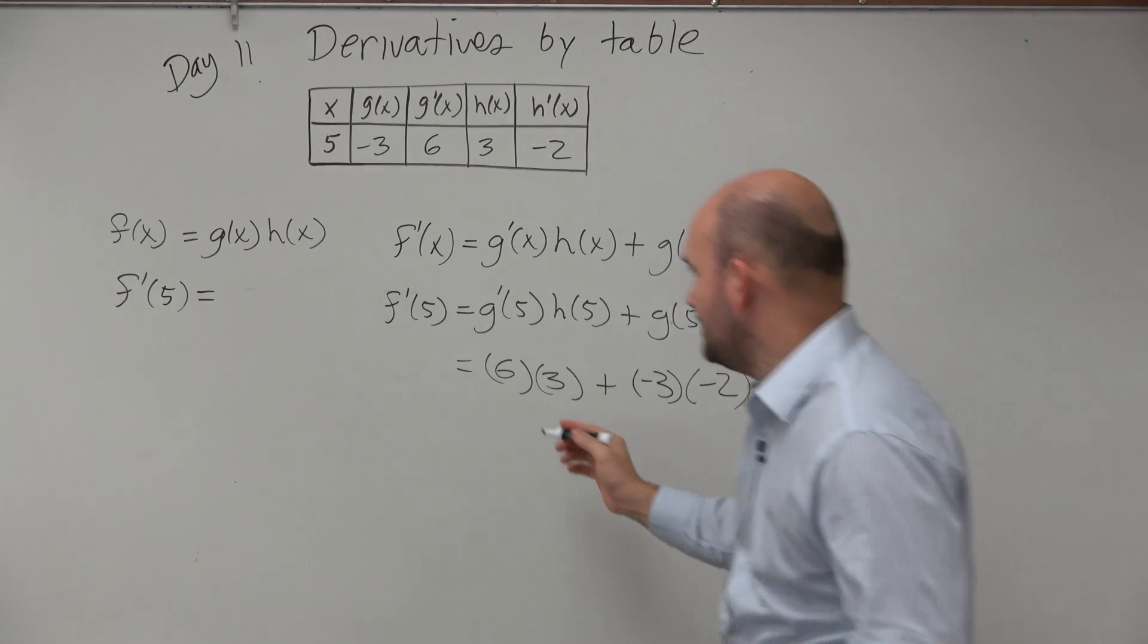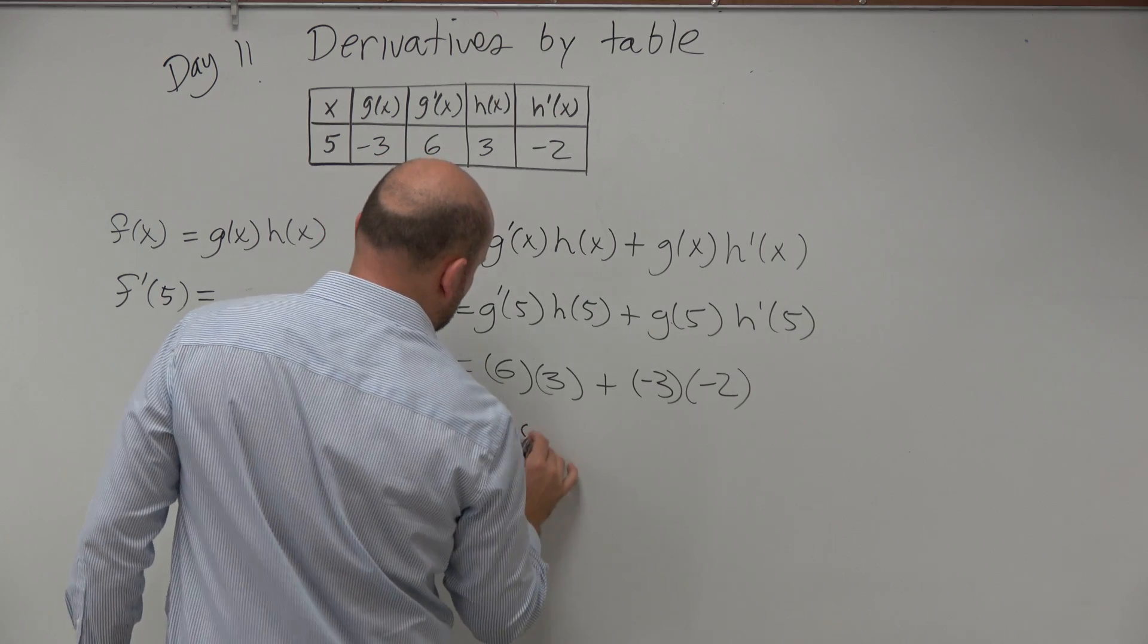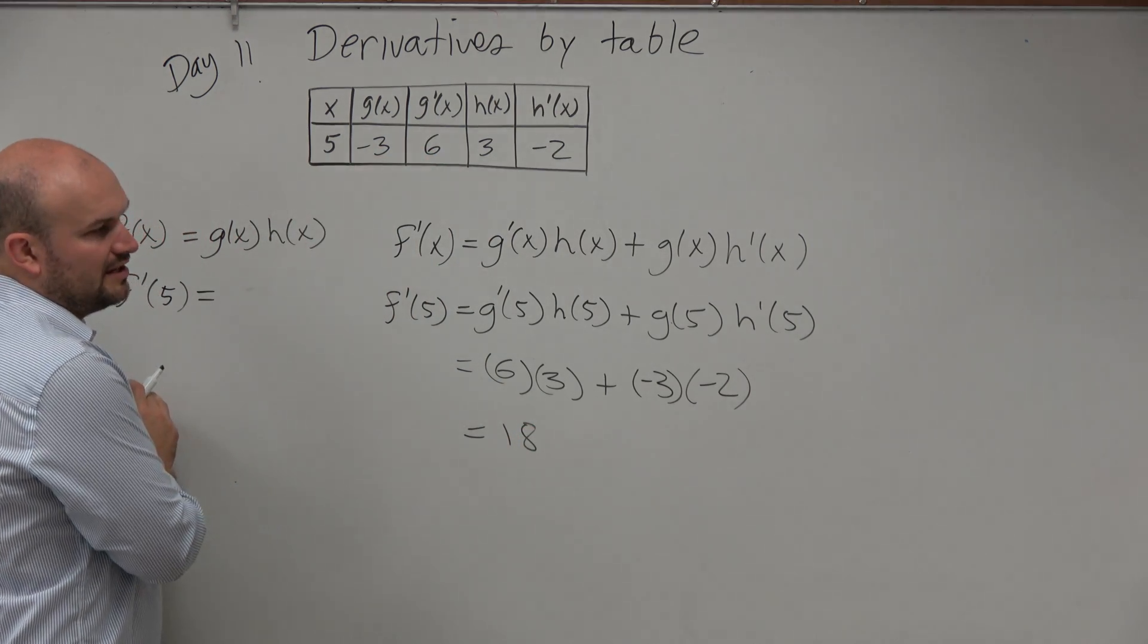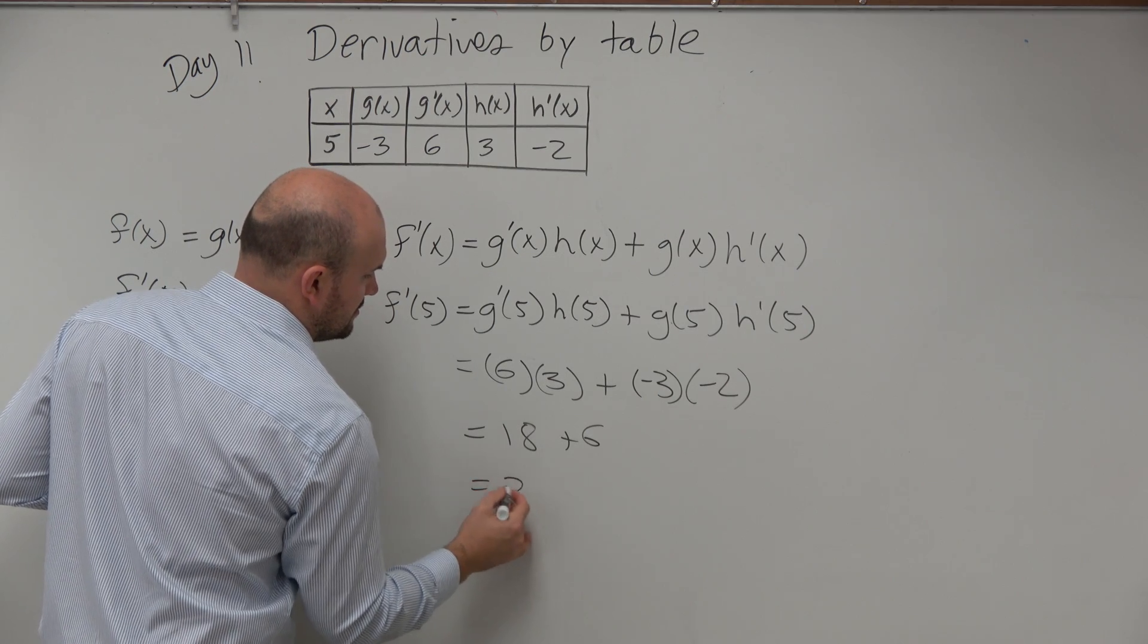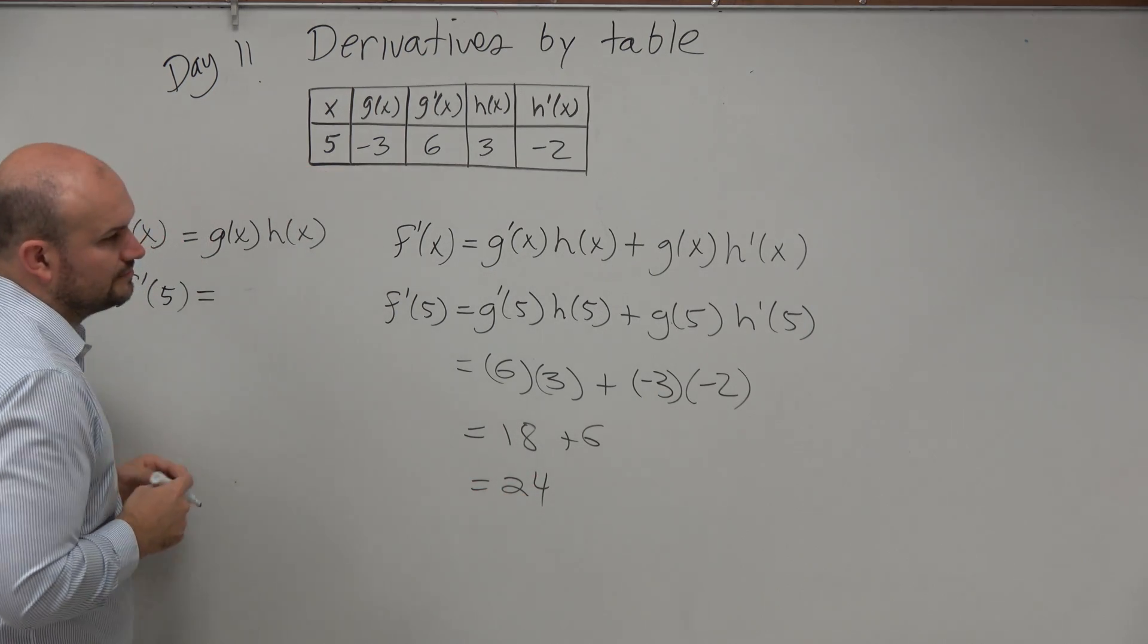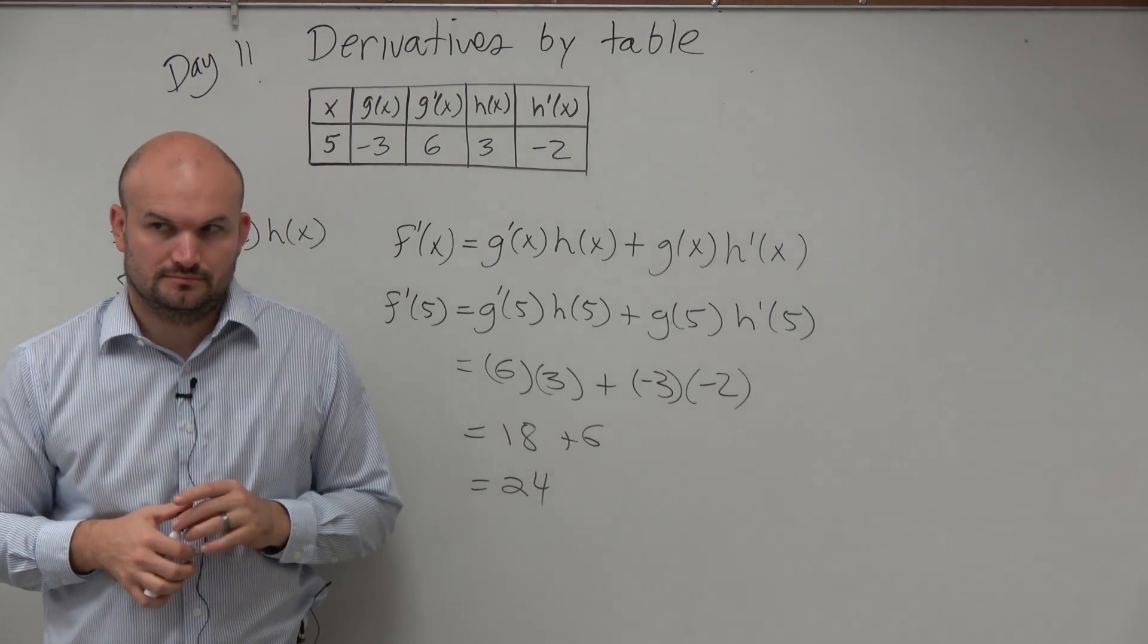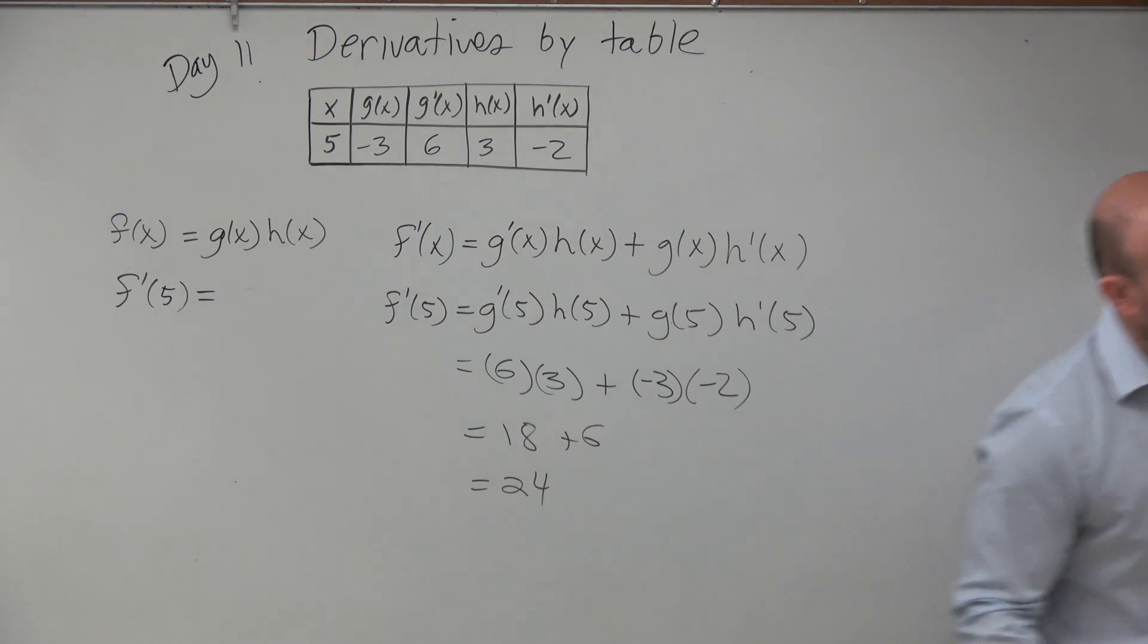So 6 times 3 is 18 and negative 3 times negative 2 is a positive 6. So that equals 24. Makes sense. It's kind of fairly simple. We'll get into ones that kind of get a little tricky.